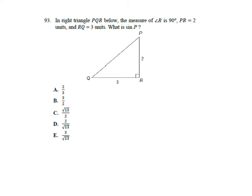Example 4 says, in right triangle PQR below, the measure of angle R is 90 degrees. PR equals 2 units, RQ equals 3 units. What is sine P? So again, mark your angle, label your sides. So this is opposite, this is hypotenuse, this is adjacent.